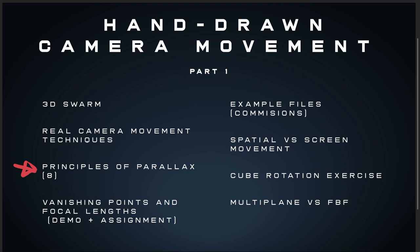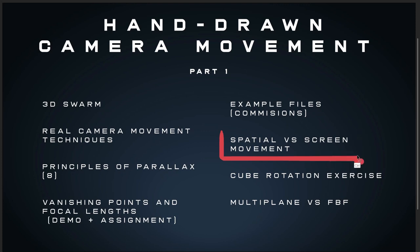We've got Principles of Parallax — eight principles to help you understand parallax, which is really important for hand-drawn camera movement. By the way, we are not using 3D software for this; this is hand-drawn. There are example files from real commissions I've created for clients — you can open them, look through the layer structure, and see how they operate. You'll also see spatial versus screen movement, a super important concept that changes the way you see animation.